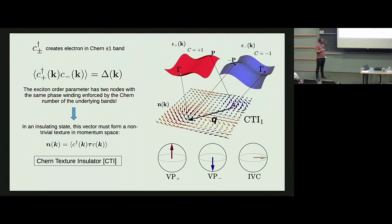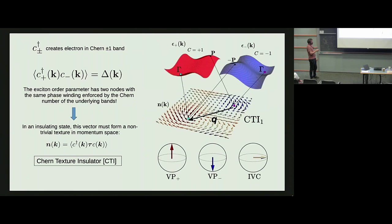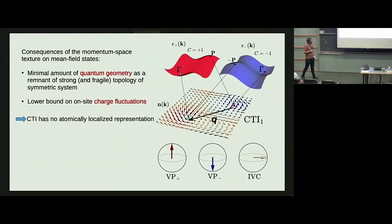An important point about time reversal symmetry: as in Moiré materials, to preserve time reversal, at one Meron core the vector n must point toward the north pole and at the other it must point toward the south pole, because the out-of-plane component is odd under time reversal. So having north pole at one core and south pole at the other is the time-reversal-symmetric configuration.